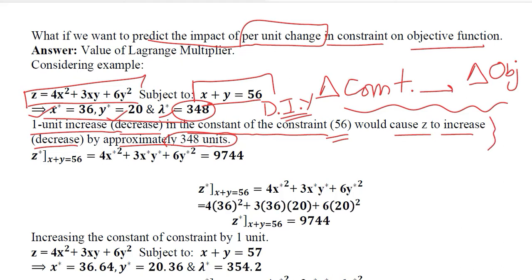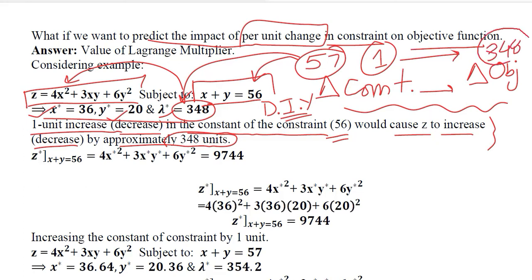In other words, if I make 56, 57, then there will be this much of increase in the objective function. This is what it is telling me. That the constraint, if it is increased by one unit, what will be the change in the objective function? It will change by 348 units approximately. For this, I should try to find out the value of Z in the current situation with 56 as the constraint.